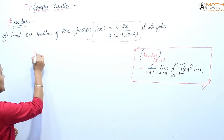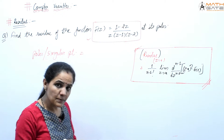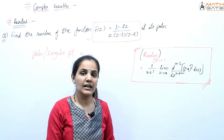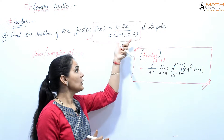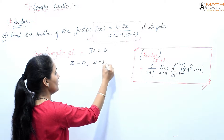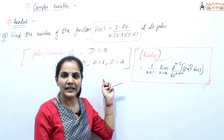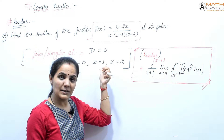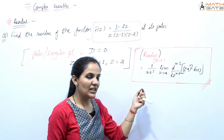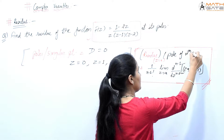As we know, poles or singular points are the points where the given function is not analytic. To find poles of any complex function, set the denominator equal to zero. From z(z−1)(z−2) = 0, we get poles at z = 0, z = 1, and z = 2. We need to find the residue at each of these three poles one by one.